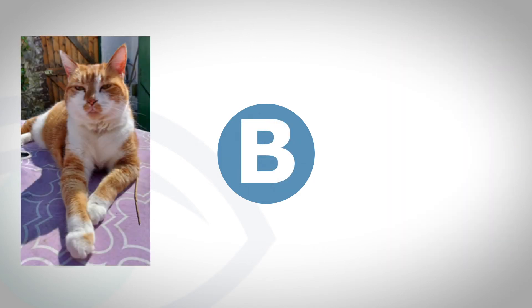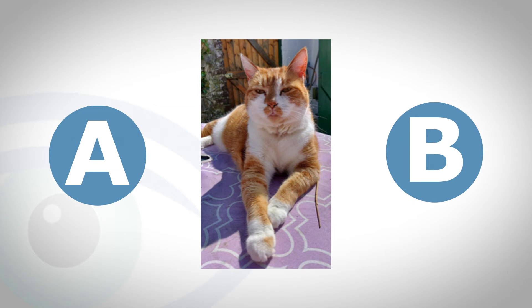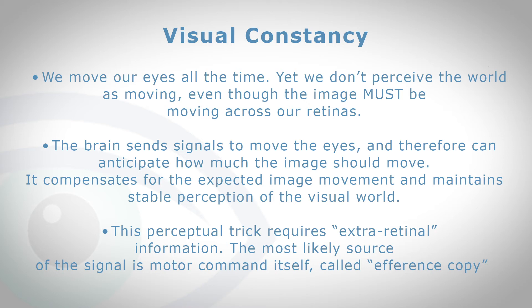If instead we looked at point B, she'd be in my left visual field, and again she would be blurry. Now let's do a little experiment — look at point A and then point B and go back and forth. What you'll see is that she's a bit blurry because she's not on your central vision, but actually she doesn't move, even though your eyes are moving. She stays still, and this is called visual constancy. We move our eyes all the time yet we don't see the world as moving, even though the images must be moving across our retinas at quite high speeds.